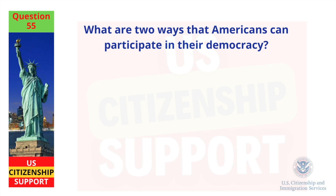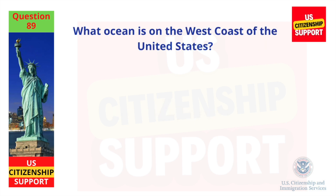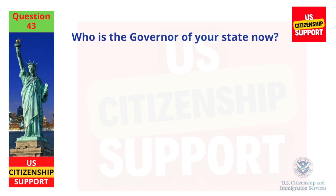What are two ways that Americans can participate in their democracy? Vote. Join a political party. What ocean is on the west coast of the United States? Pacific Ocean. Who is the governor of your state now? This answer will vary.